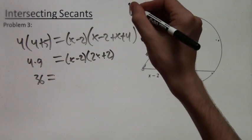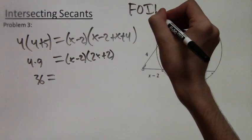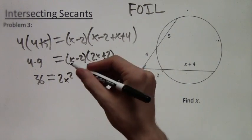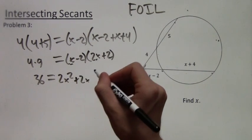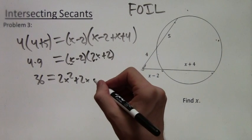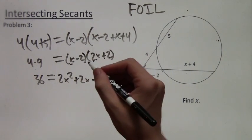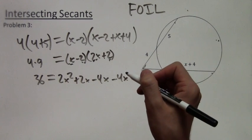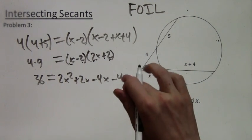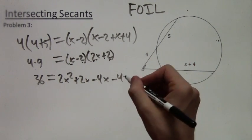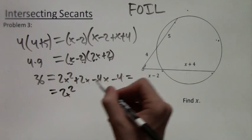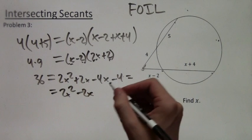Now we've got to FOIL this out. I'm going to write FOIL here. First we do the firsts, that's 2x squared. The outers, that's plus 2x. The inners, that's minus 4x. And the last, that's negative 2 times 2, is negative 4. And then this equals, I'm just going to collect like terms, 2x squared minus 2x minus 4.